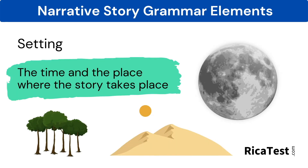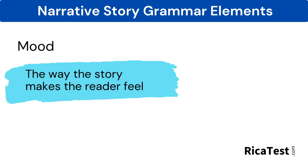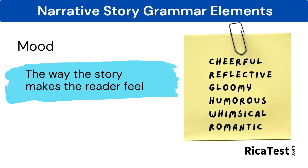The setting is the time and the place where the story takes place. The mood is largely influenced by the writer's style and is the way the story makes the reader feel. The feeling can arise from the writing style, font choice, color, and more.